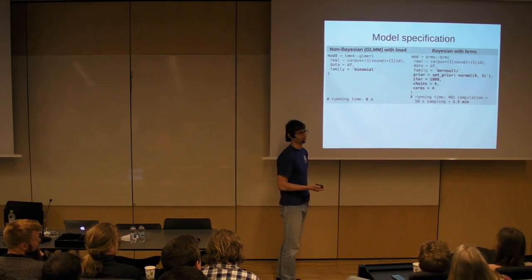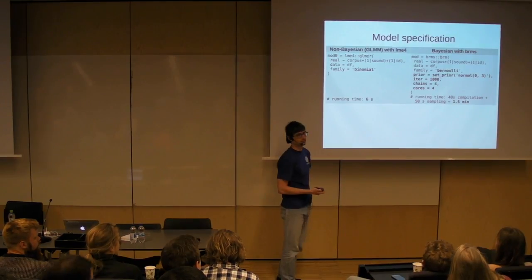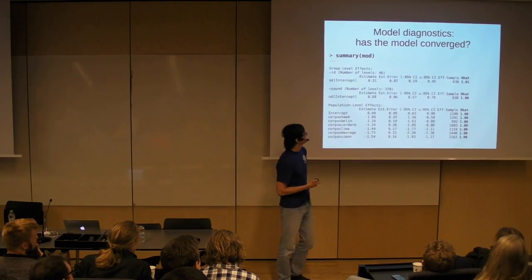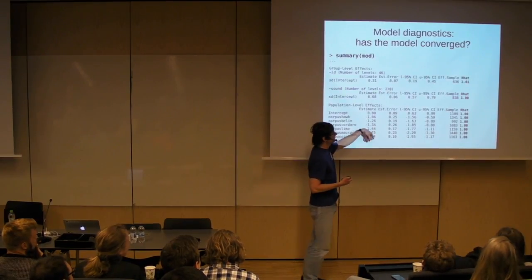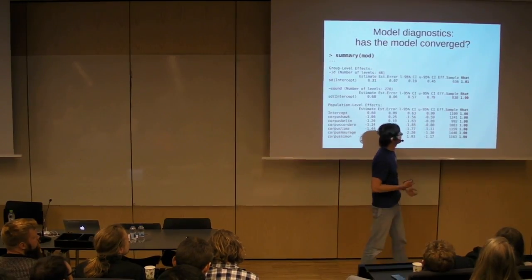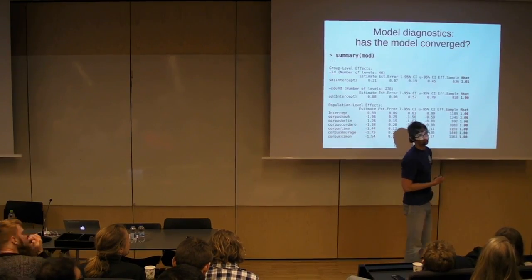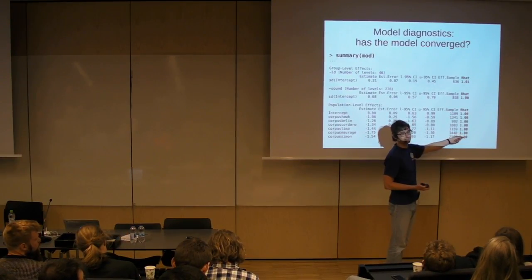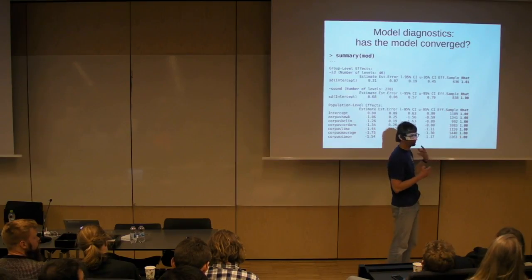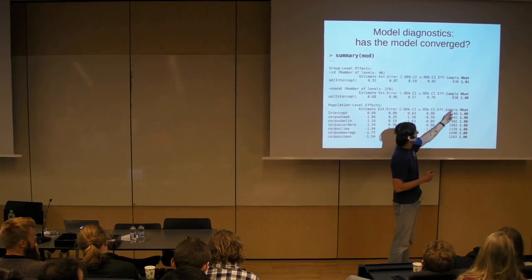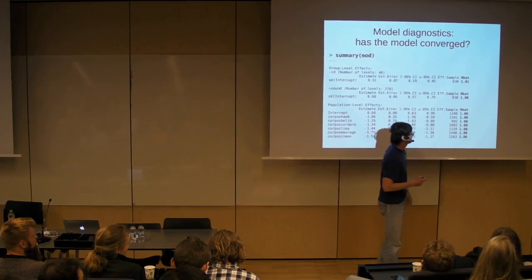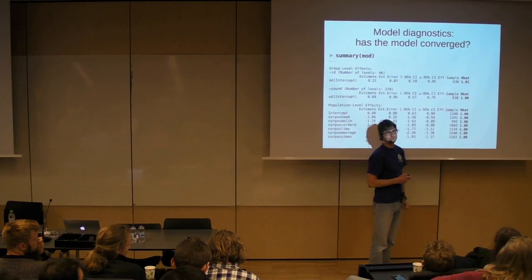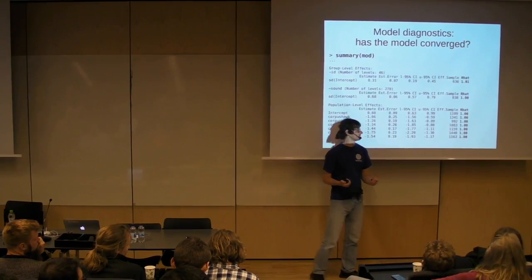Once we have the model, before we start analyzing it, we want to check: has it converged, does it make sense? The easiest way is to look at the summary. Apart from the coefficients with 95% credible intervals, we also get the R-hat statistic. If it's one or very close to one, everything is fine; if it's much more than one, something is wrong. Also look at the effective sample size — if you have something like a couple of thousand, that's good; if suddenly for one coefficient the ESS is really low, like 10, something weird is going on.